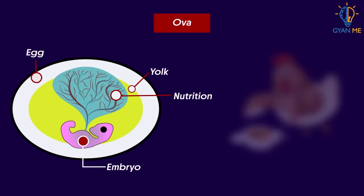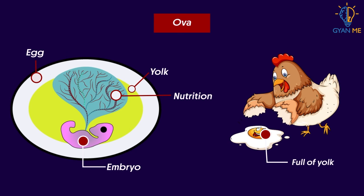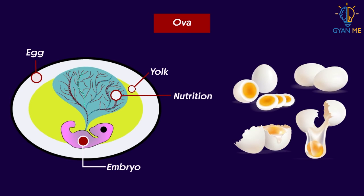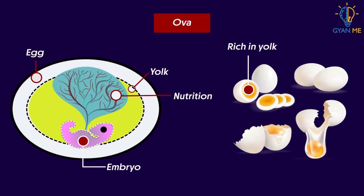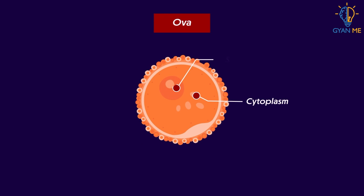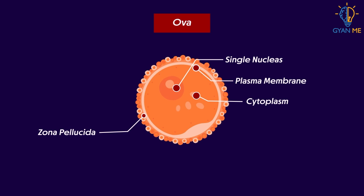Can you think of any animal or egg which is full of yolk? Very simple — the eggs that we eat and consume are rich in yolk. To be very specific, the yellow-colored fluid we see in an egg is nothing but yolk. In animals whose embryo does not get nourishment from the mother's body directly, the embryo gets nourishment from the yolk. Along with the yolk, each ovum contains abundant cytoplasm and a single nucleus. The ovum is surrounded by three membranes outside the plasma membrane: an inner thin zona pellucida and an outer thick corona radiata, which together form the structure of the ovum.